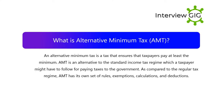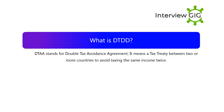What is DTAA? DTAA stands for Double Tax Avoidance Agreement. It means a tax treaty between two or more countries to avoid taxing the same income twice.